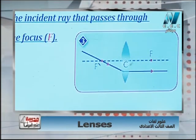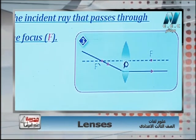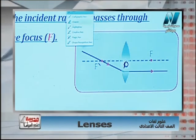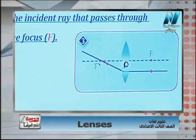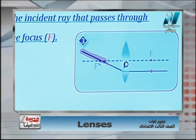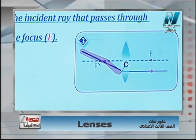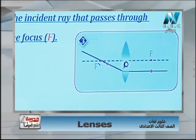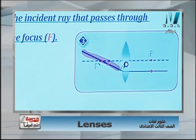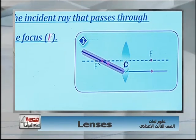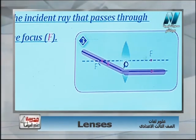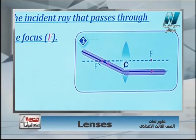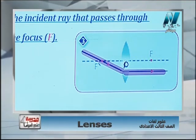Rule number three: if the light ray passes through the focus, in this case the light ray will refract parallel to the principal axis. Now let's look at how we deal with the problems.